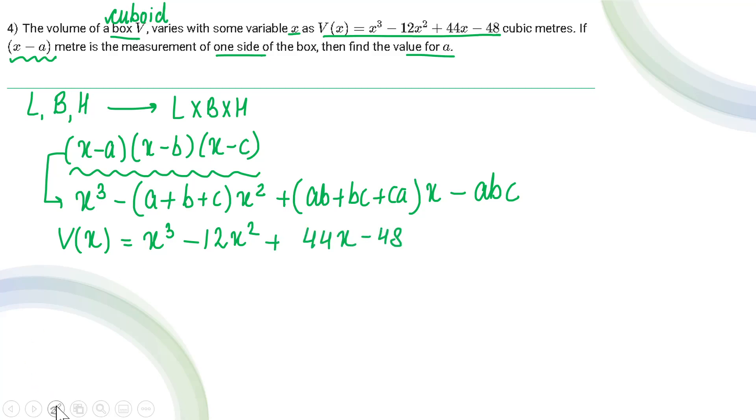Now I have two equations of the same value. First equation and second equation both are the expressions of V(x). So after comparison, I am getting that a plus b plus c is equals to 12, ab plus bc plus ca is equals to 44, and abc is equals to 48.